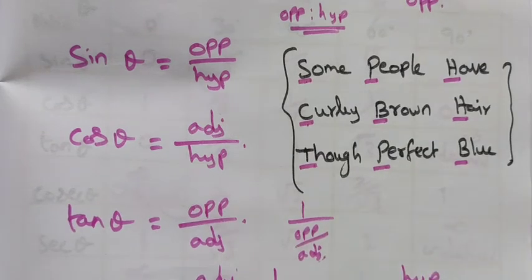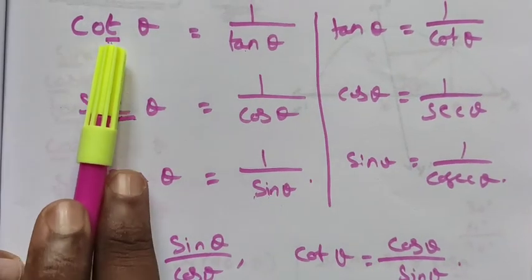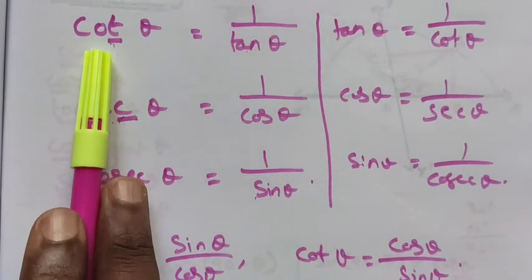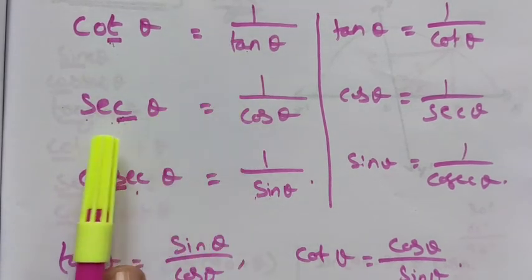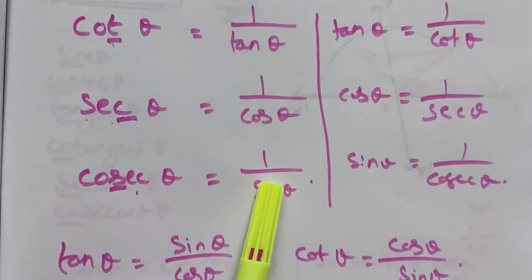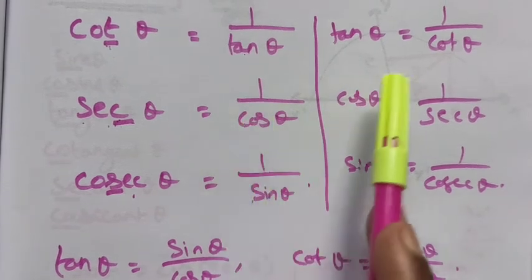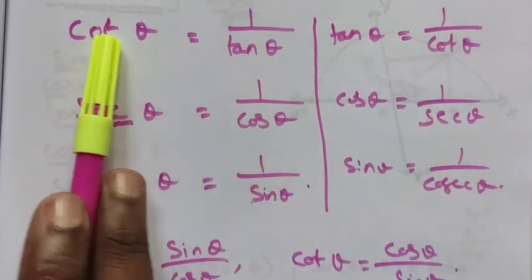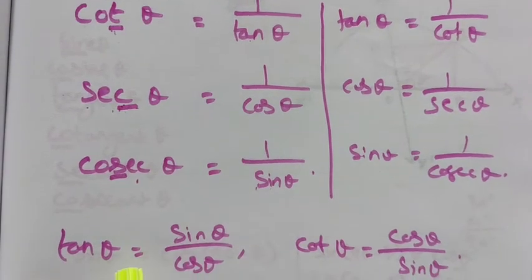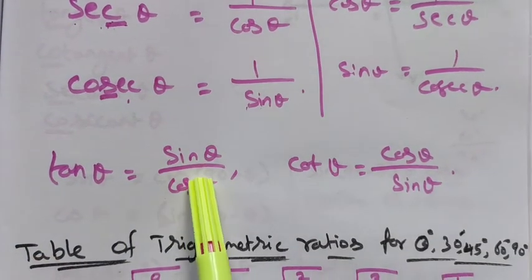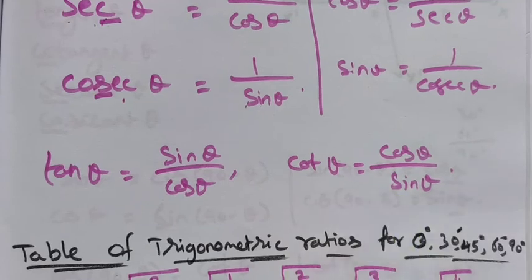The reciprocal ratios: cot theta is 1 by tan, secant is 1 by cos, and cosecant is 1 by sin. We can rewrite in that format. Also, tan theta is equal to sin divided by cos, and cot theta is equal to cos divided by sin.